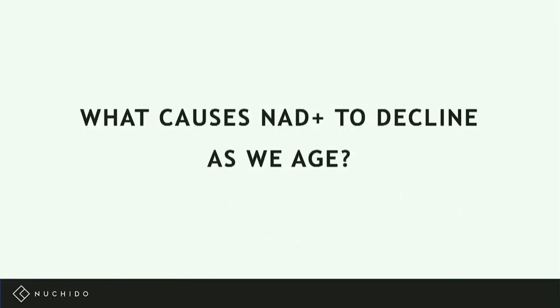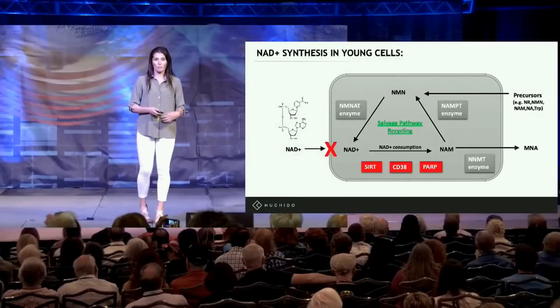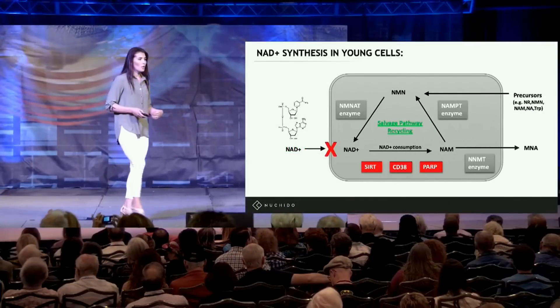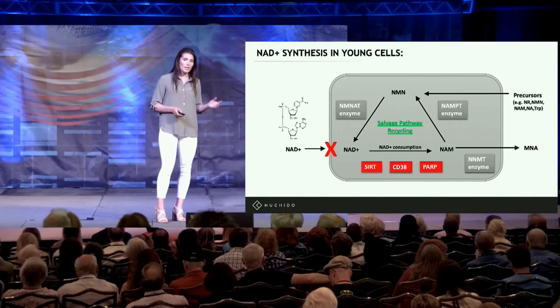So what actually causes our NAD levels to decline? To understand this, you first need a good understanding of how young cells make NAD. Here is a very simplified version of a cell. The first thing to note is that NAD is actually a very big molecule in terms of molecular size, which means it finds it really difficult to pass across the cell membrane intact.